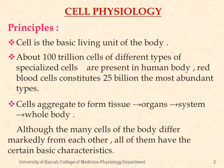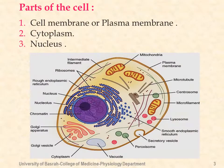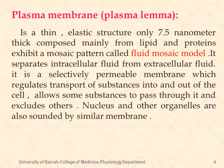Although the many cells of the body differ markedly from each other, all of them contain the same basic structures. Parts of the cell: first, the cell membrane or plasma membrane; second, cytoplasm; and third, the nucleus. The plasma membrane, also called the plasmalemma or cell membrane, is a thin elastic structure only 7.5 nanometers thick, composed mainly of lipids and proteins.